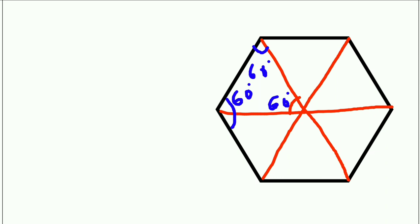Hence, consider this triangle. This triangle is an equilateral triangle, which means all the sides are equal. So basically, the area of this regular hexagon is six times the area of one triangle.